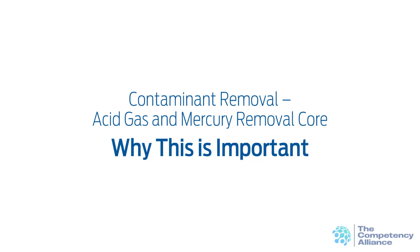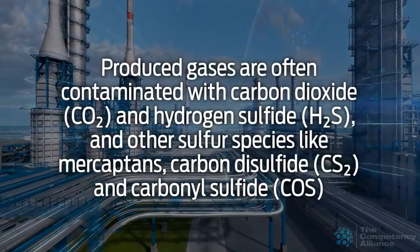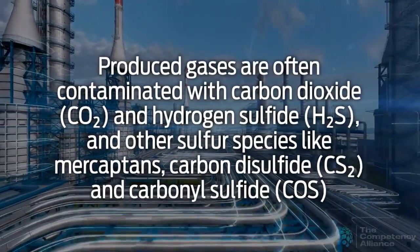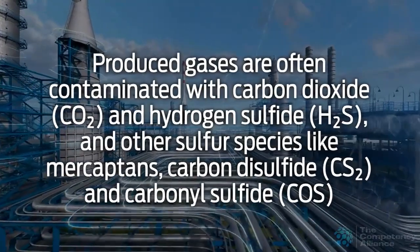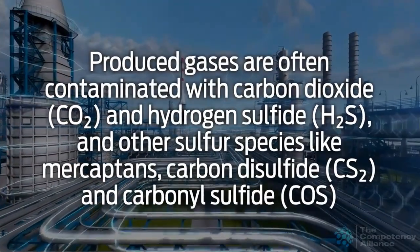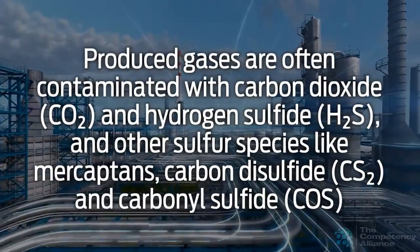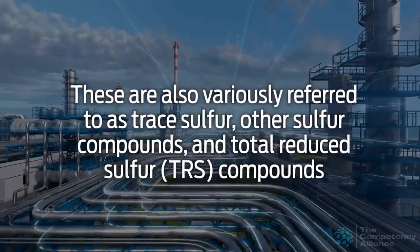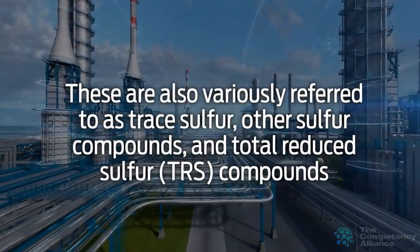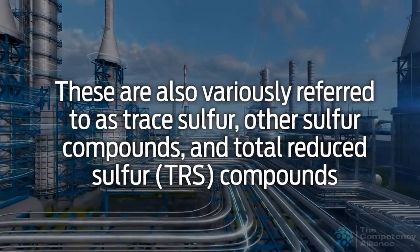This section discusses why this topic is important. Produced gases are often contaminated with CO2 and H2S and other sulfur species like mercaptans, carbon disulfide (CS2), and carbonyl sulfide (COS). These are also variously referred to as trace sulfur, other sulfur compounds, and total reduced sulfur compounds, or TRS.